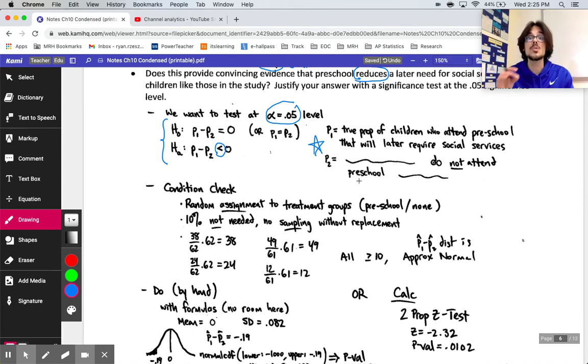For our alternative, it was suspected that this preschool program would be helpful, meaning less of the participants would end up requiring social services. Does this provide convincing evidence that preschool reduces the need for social services? That's why we went with a less than in our alternative. If P1 minus P2 is less than 0, P1 is smaller. And do not forget to define your variables. Then we go to our conditions. This time, it was going to be random assignments to treatment. Since this was not random sampling, we were doing an experiment. We actually randomly assigned them. So there was random assignment. That means random assignment is independent by nature. The 10% condition, we're just going to gloss right over that. We didn't sample from the population. And then I checked all my N times P's and N times 1 minus P's for this problem. They're all greater than or equal to 10, which means our distribution is approximately normal. Those words approximately normal need to be on your paper.